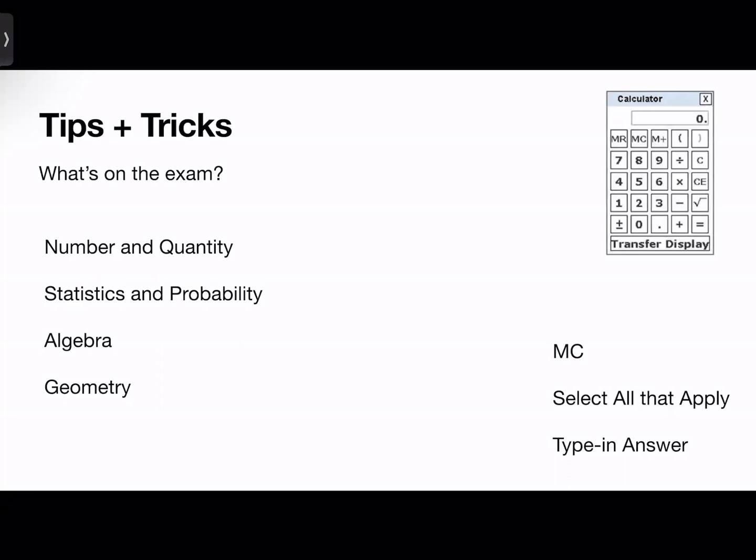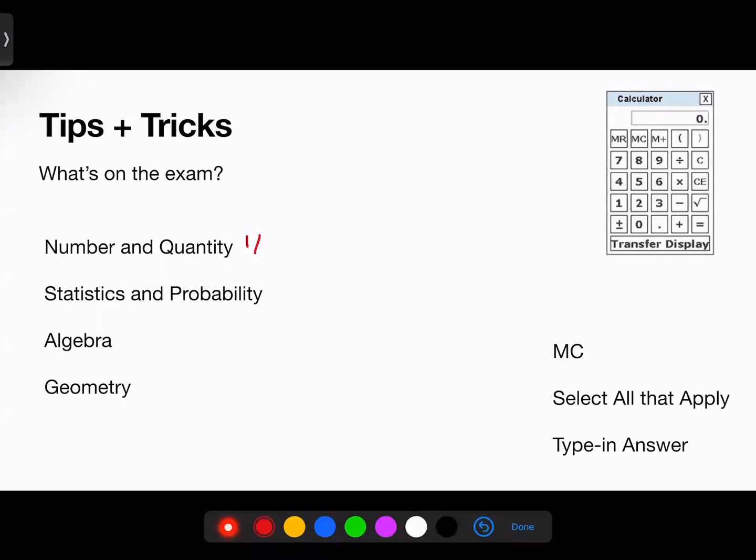So what's on the exam? The questions can be broken down into four categories. Number and quantity is one-third of all questions on the exam. It contains problems about fractions, ratios, place value, and radicals.